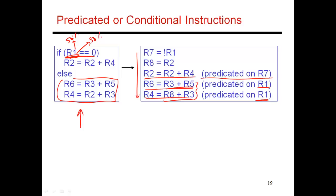The else part is based on the condition of R1, and the then part is based on R7, which is set to be the opposite of R1. So before you get into this code, you have to set R7 to be the opposite of R1. This is what predication does: it converts control dependencies into data dependencies.